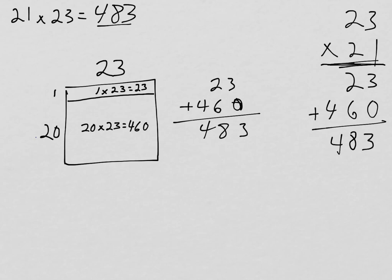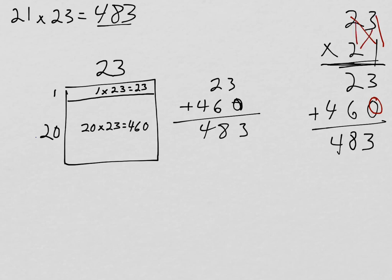Now let's talk through the more traditional method and see how this works. 1 times 3 is 3, 1 times 2 is 2 — those go down below. And then we add the 0 because what we're really doing here is showing that we're multiplying by a number in the 10's place — so we're multiplying by 20. We're going to do the multiplying by 2, and then multiply the whole thing by 10 and shift it one place value to the left. That's where the 0 comes from. 2 times 3 is 6, 2 times 2 is 4. We're multiplying one place value at a time in that most traditional method, and that is totally fine to use. It's mathematically sound. It's just important to understand where it comes from so that you can use it in lots of different ways.